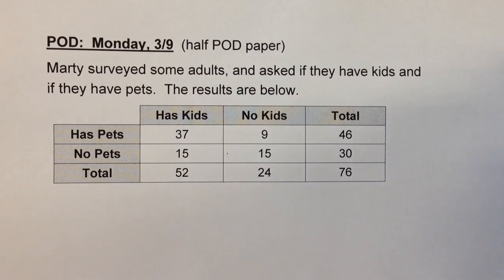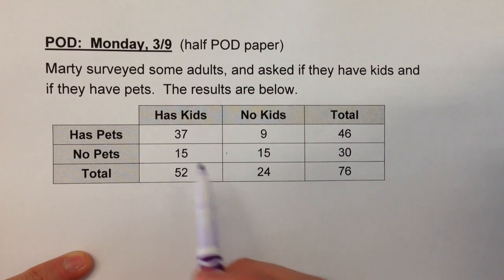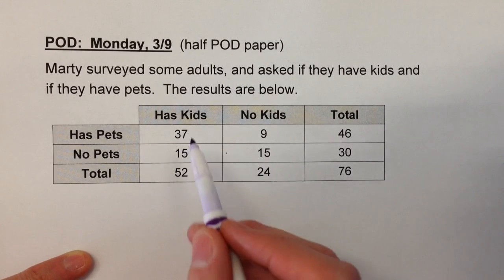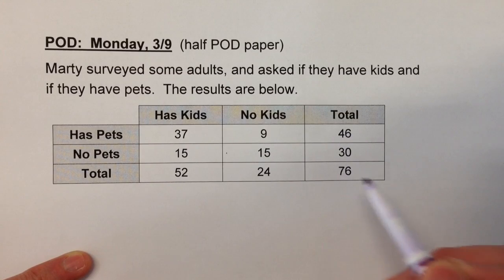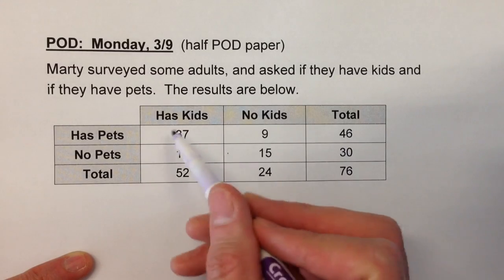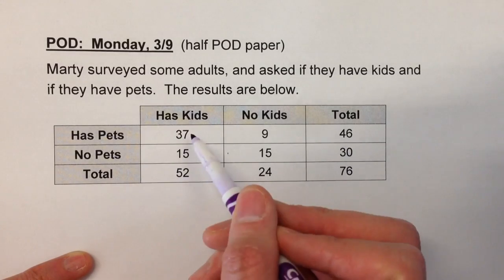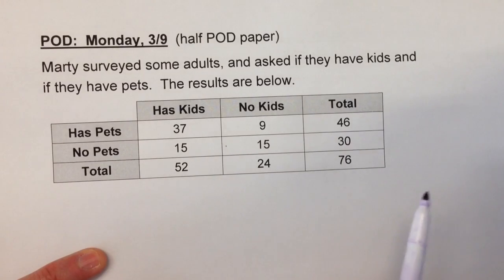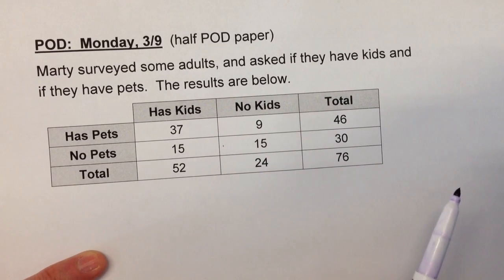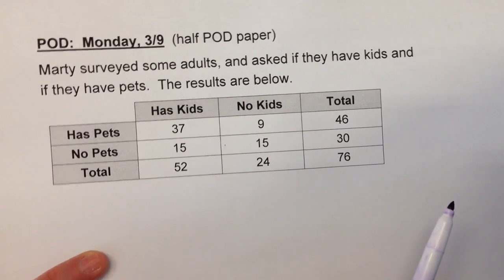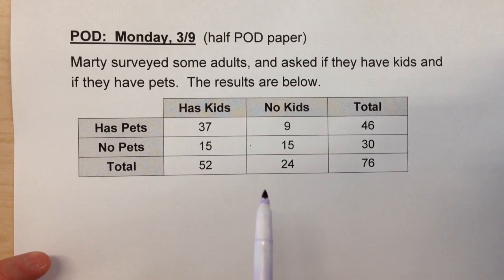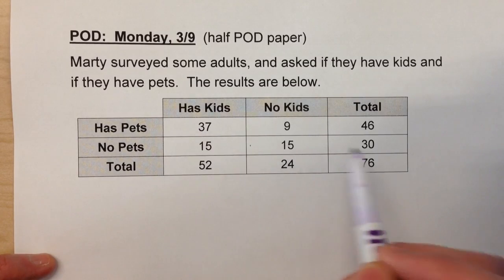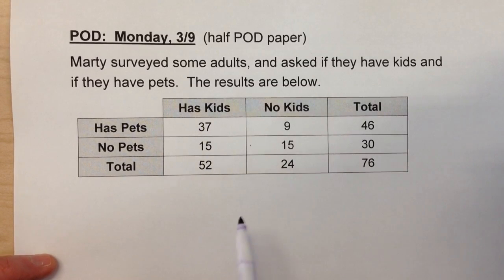We were working with two-way tables again today. The two-way tables we've been working with lately are called two-way frequency tables because the numbers in them show you the frequency of responses. Each of these is how many people responded with a given combination. Today, we started working with two-way relative frequency tables. Relative frequency is basically a fancy term for a percent, because we want to know the frequency of a certain combination relative to a total.